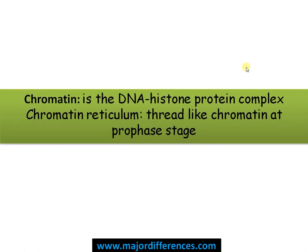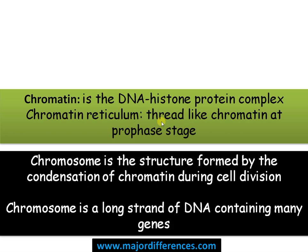So here is a summary. Chromatin is a DNA-histone protein complex. DNA is negatively charged, whereas histones are proteins having a high amount of positively charged amino acids like arginine and lysine. Chromatin reticulum is a term used for the same thing — the thread-like chromatin often seen at prophase or interphase stage. Chromosome is the structure formed by condensation or compaction of chromatin during cell division, often referring to the metaphase chromosome.